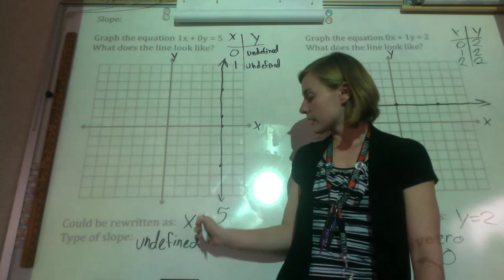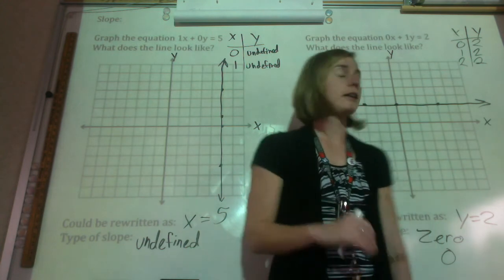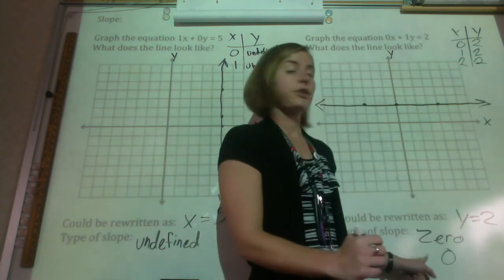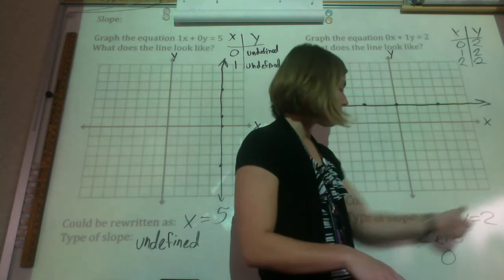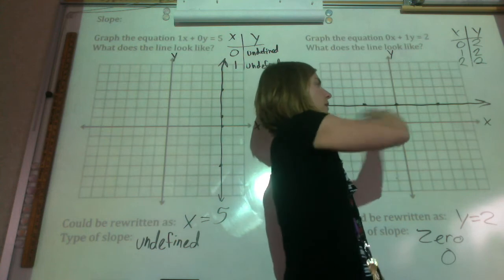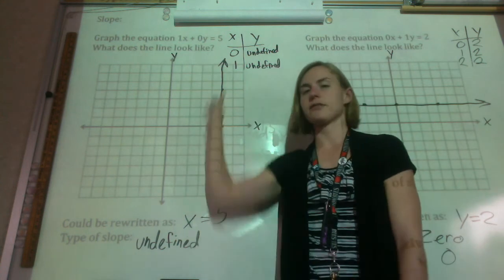So if you have x equals something, your slope is undefined. If you have y equals something, your slope is 0 because it's going to be flat. And if you have trouble remembering that, just graph it out and you'll be able to see. This is a 0 slope, that's undefined.